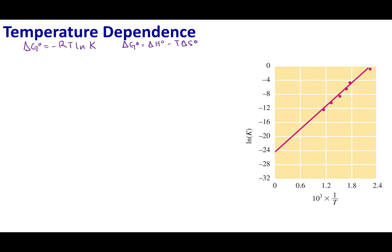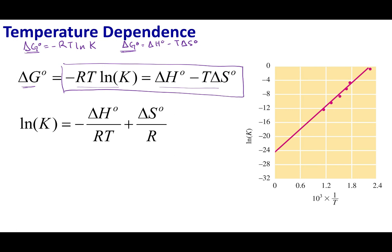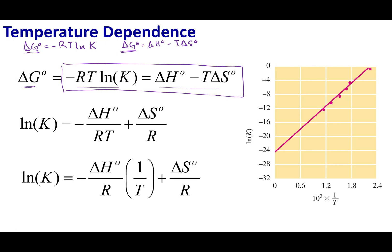So I have two expressions of delta G, and what I'm going to do is substitute one into the other. Delta G naught equals negative RT ln K, and it also equals delta H minus T delta S. I'm going to isolate some variables and use a graphical trick. When we graph data, we want to plot points such that we get a straight line, which has the equation Y equals MX plus B.